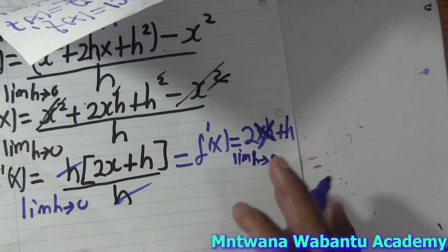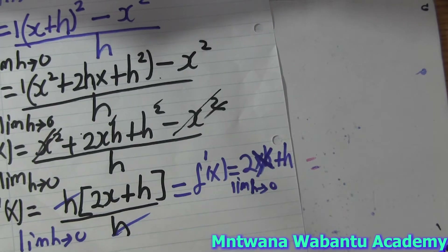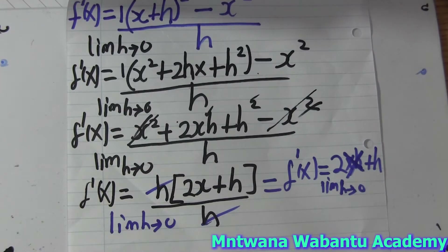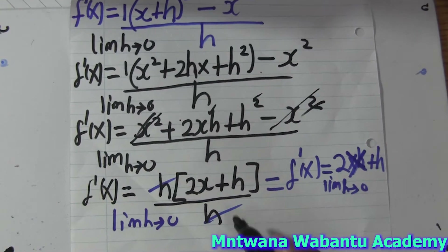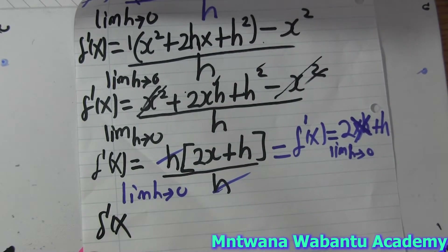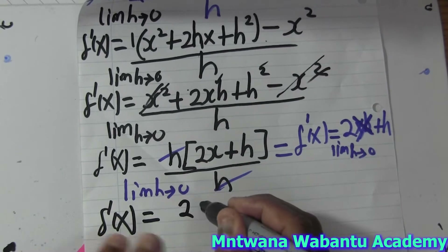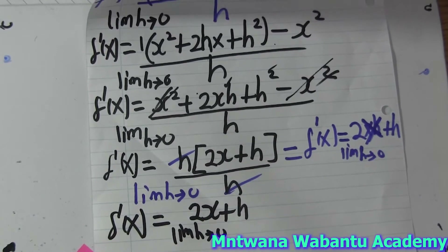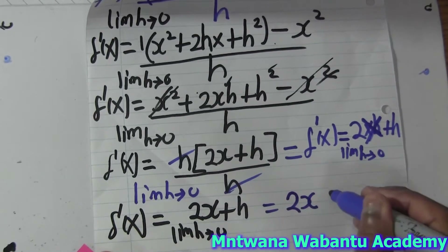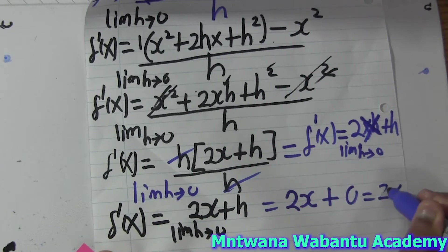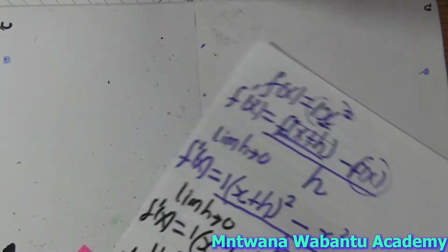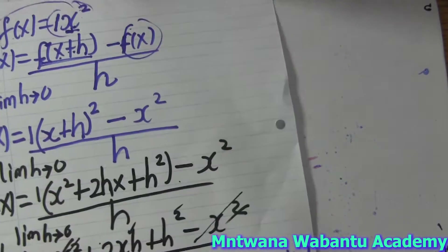So now f prime equals 2x + h, and we still have our limit h approaches zero. The only time you substitute the limit is when you cannot factorize or simplify anymore. So since we can't simplify further, we substitute h = 0, giving us 2x + 0 = 2x.